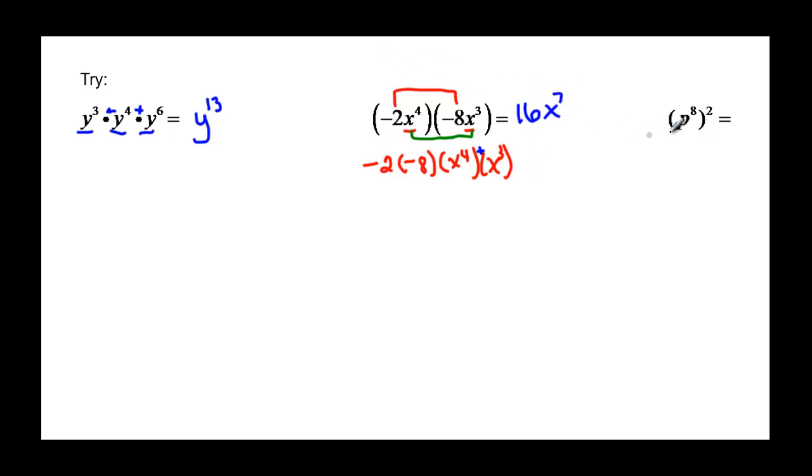And finally we have a real simple p to the 8 squared. That's the simplest one we have on here. And that just means that we have to multiply our exponents. So 8 times 2 would give us p to the 16.